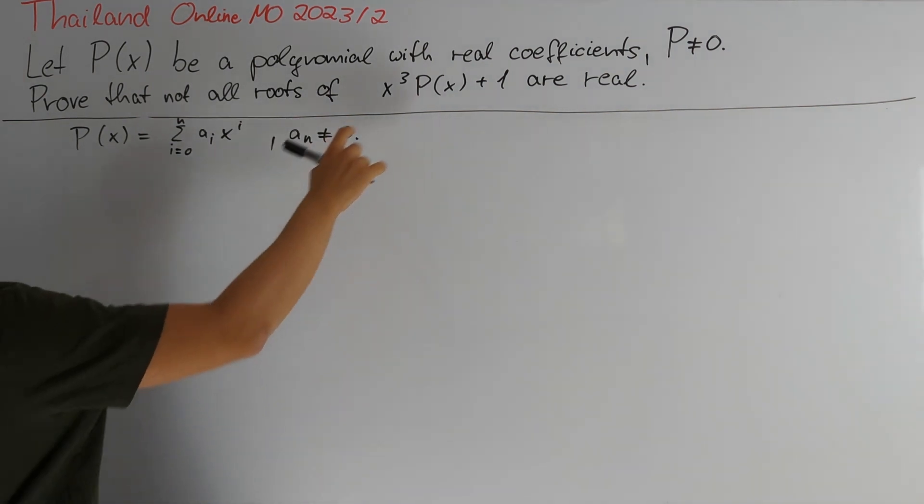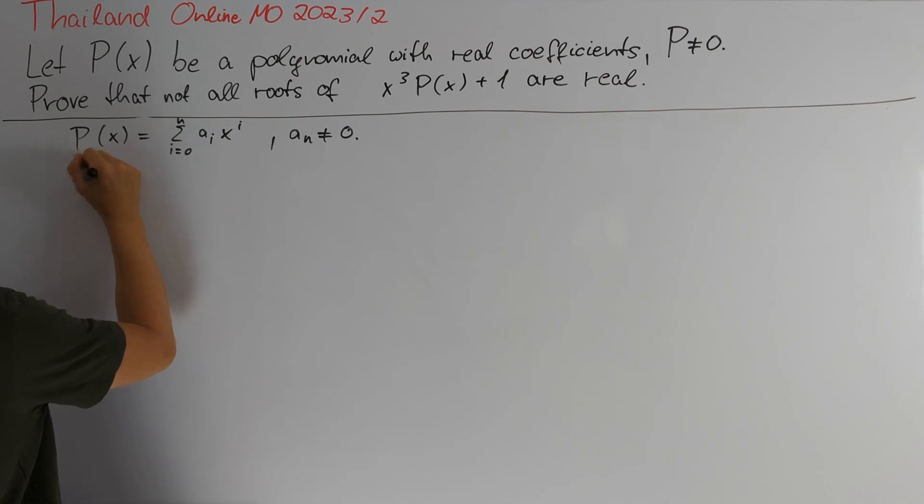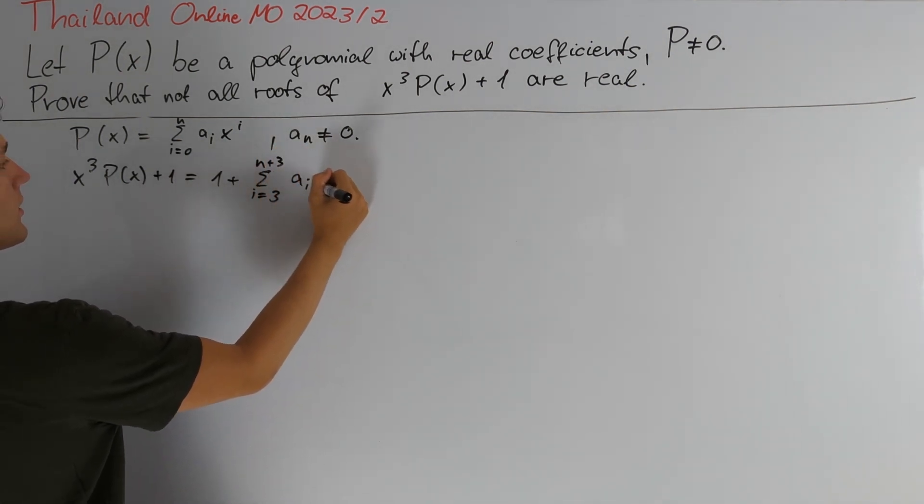This gives us an explicit representation for x³P(x) + 1. Namely, it is equal to 1 plus the sum of i going from 3 to n+3 of aᵢ₋₃ times x to the power of i.